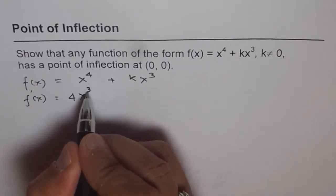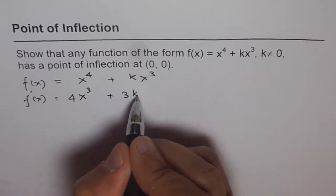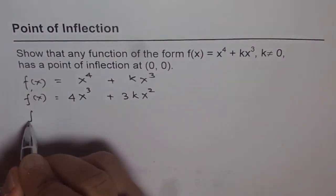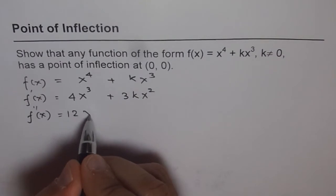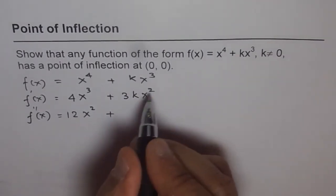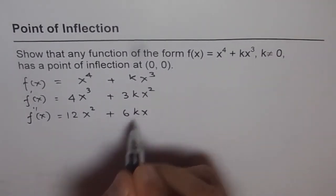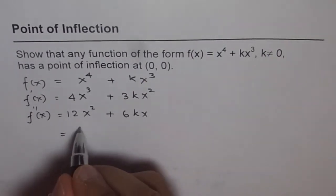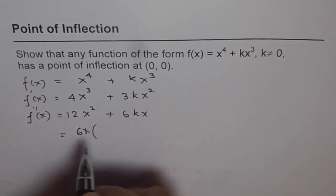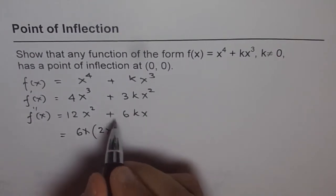So we get f'(x) = 4x^3 + 3kx^2, that's the first derivative. And the second derivative for us is 12x^2 + 6kx. Now we can factor this, we can take 6x common, so we get 6x(2x + k).